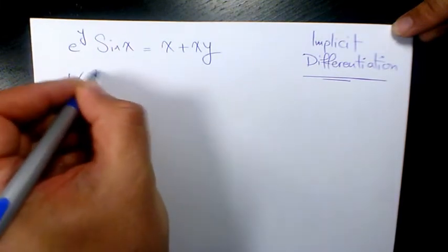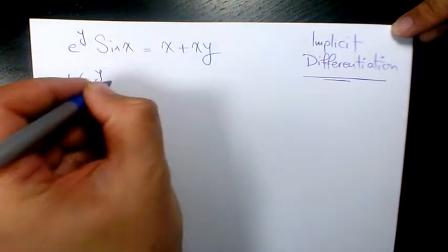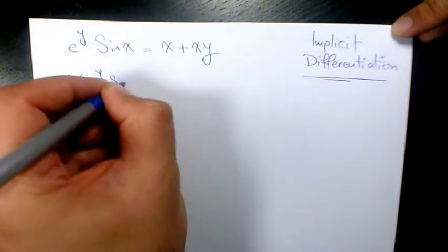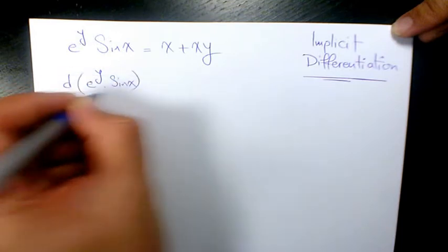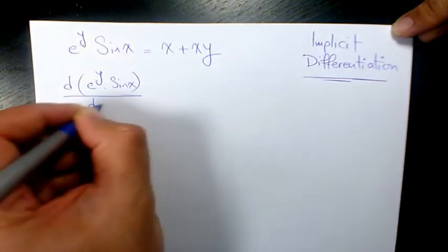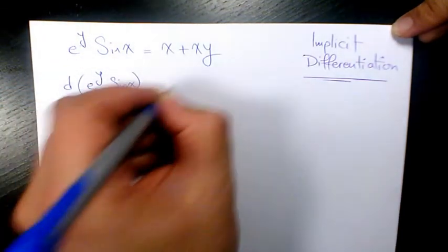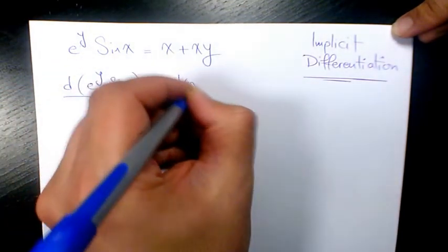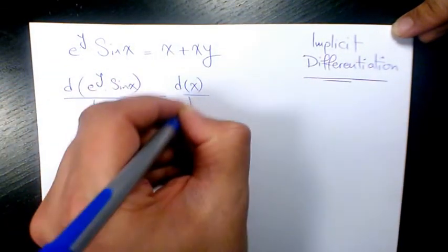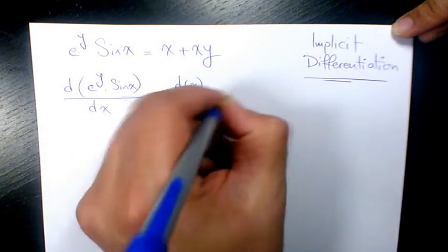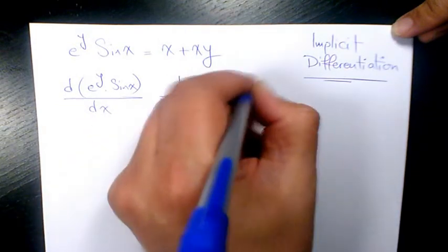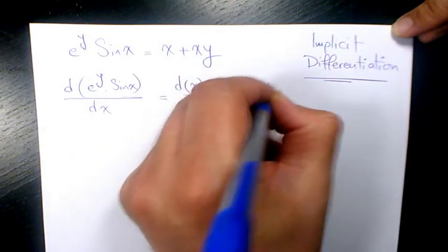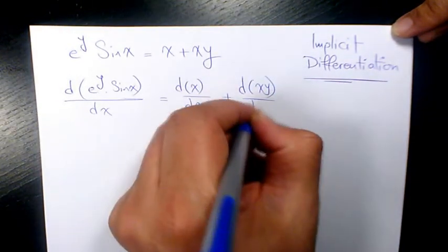So what we need to do is find the derivative of e to the power of y sine x with respect to x, equals the derivative of x with respect to x, plus the derivative of xy with respect to x.